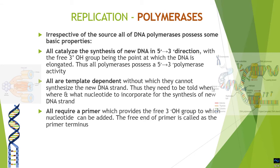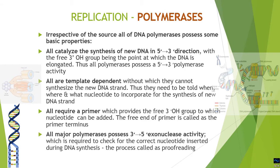The fourth property is that all major polymerases have 3'→5' exonuclease activity, which is opposite to their polymerase activity. This activity checks whether the correct nucleotide has been inserted. If the wrong nucleotide is incorporated during elongation, this activity removes it — a process called proofreading.